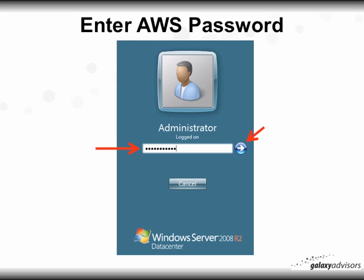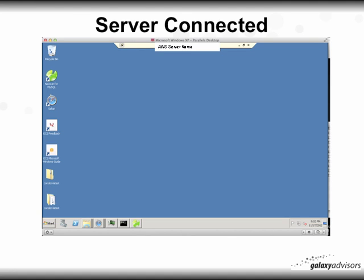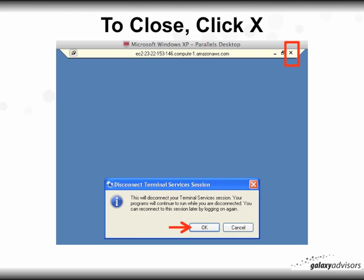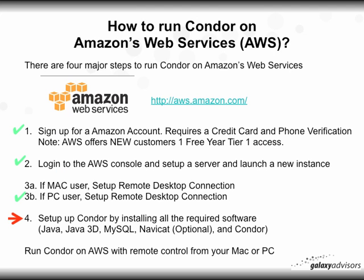Click Connect, at which time an application will start and ask you to enter your Amazon Web Services password that has been decrypted. Place it in the box, then click the next arrow. The server will connect to your Amazon instance and you'll have remote control from your PC to the Amazon server. To close it, click the X in the upper right corner and a window will open asking you to disconnect the terminal session. For Windows 7 or Windows 8, the detailed instructions are very similar to Windows XP.